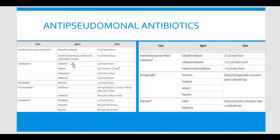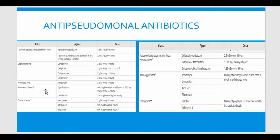Ceftazidime comes next — the second most popular antibiotic for pseudomonas. From the cephalosporins we also have cefepime and cefoperazone. Cefiderocol is also included in this group. Aztreonam is the monobactam choice. For fluoroquinolones, ciprofloxacin and levofloxacin are the options — moxifloxacin and gatifloxacin are not anti-pseudomonal, so only cipro and levofloxacin apply.